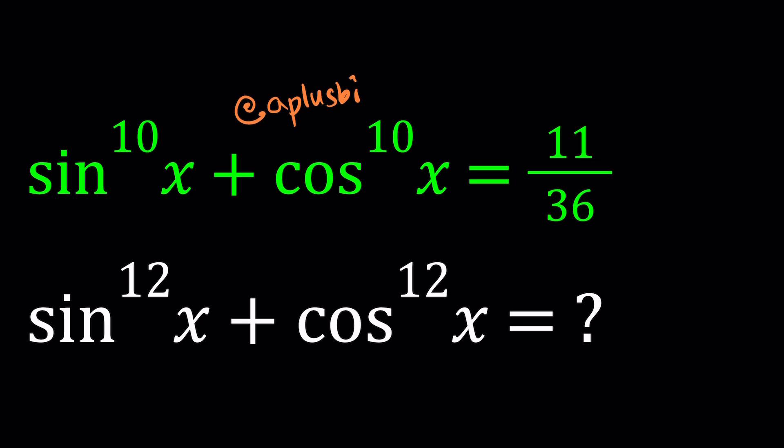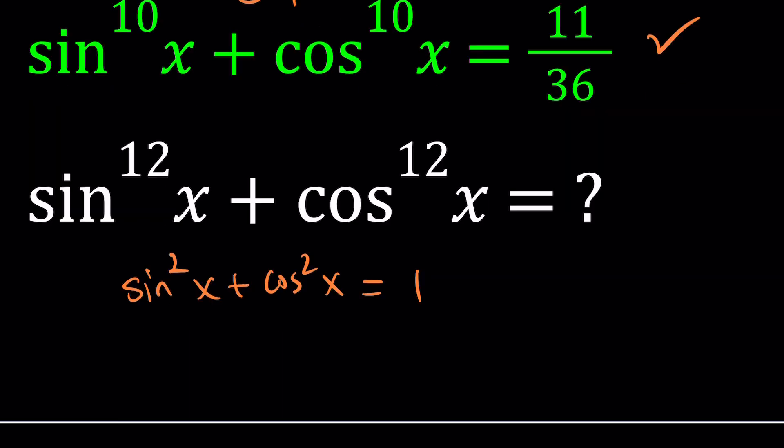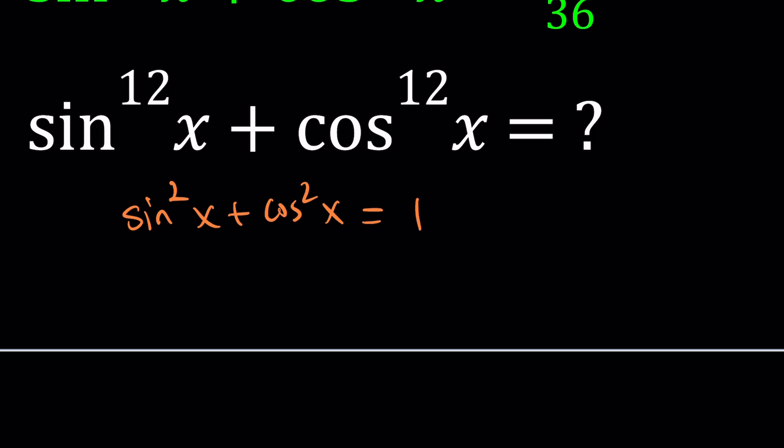To solve this problem, there are a bunch of different ways you can use. First of all, you can try to solve this equation. There are two unknowns, but those unknowns are not totally independent. They're related by a really nice identity known as the Pythagorean identity — sine squared plus cosine squared equals one. Hopefully you know this if you know a little bit of trigonometry.